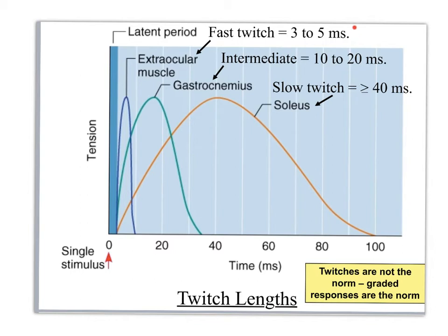The graph also shows how long different motor units take to engage. Motor units going to very small muscle cells are very fast. Those going to intermediate-sized cells are slower but still fairly quick. And motor units going to big muscle cells take the longest to fully engage.